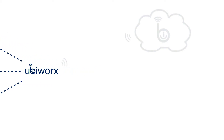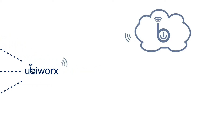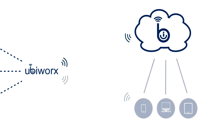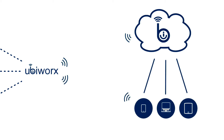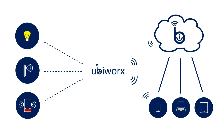UbiWorks gathers and analyzes data locally and can push information to the cloud or to a variety of smart devices. It can provide local analytics in remote locations and then take appropriate actions based on that analysis, creating smart Internet-connected systems.